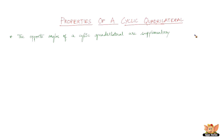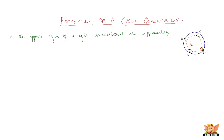So here we have a cyclic quadrilateral ABCD. The first property says that the opposite angles of a cyclic quadrilateral are supplementary. The opposite angles here are angle A and angle C, and angle B and angle D. If you add the red angles, that is angle B and angle D, which are opposite to each other, they will add up to 180 degrees.